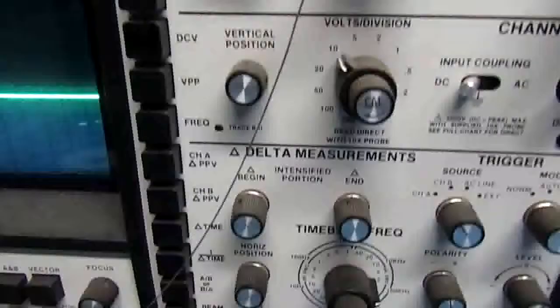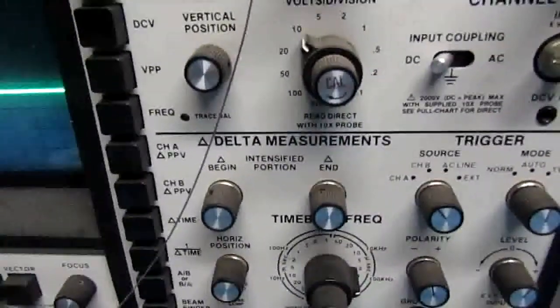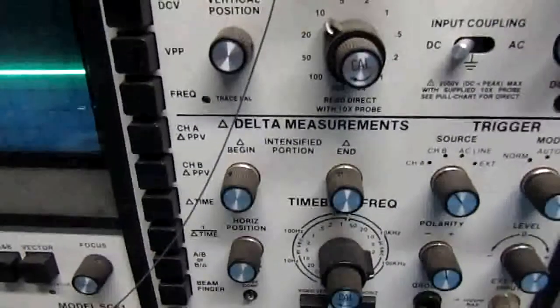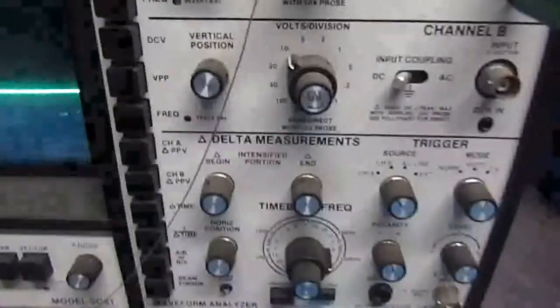And over here you have delta measurements where you can set the start and stop of any waveform on the screen and do like a capture on it. This is one of the very first microprocessor-controlled scopes.